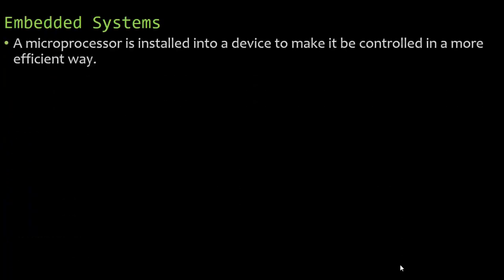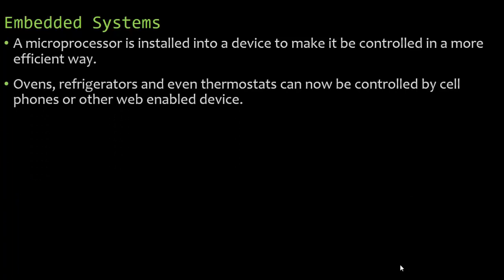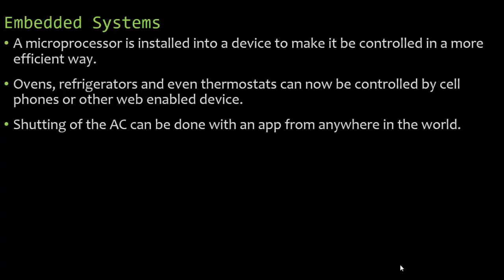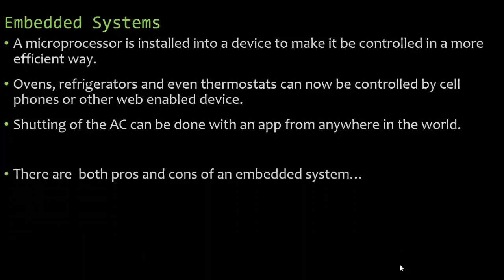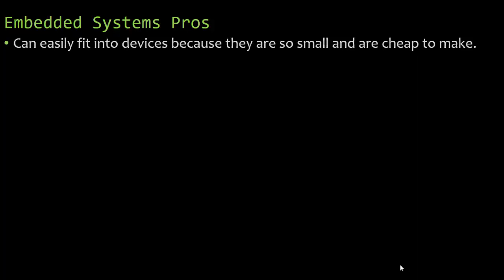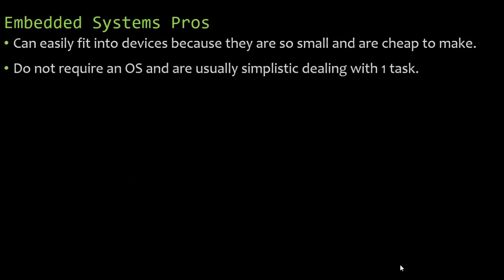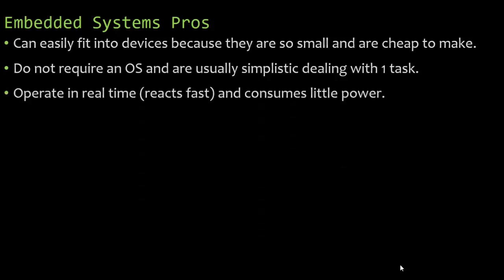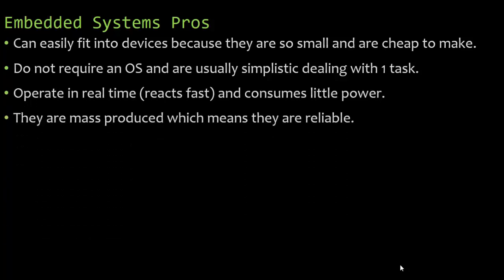An embedded system is a microprocessor installed into a device to make it controlled in a more efficient way. Ovens, refrigerators, and thermostats can now be controlled by cell phones or another web-enabled device — shutting off the AC can be done with an app from anywhere in the world. The pros of an embedded system: they can easily fit into devices because they're small and cheap to make. They don't require an operating system, are usually simplistic dealing with one task, operate in real time, react fast, consume very little power, and are mass-produced, making them reliable and cheap.